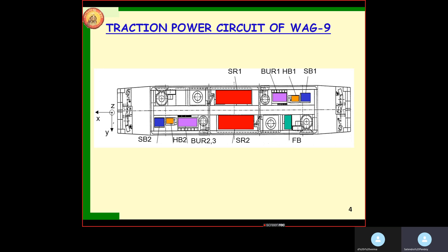Regarding the locations, let's see in the PPT. In machine room 1, we have SB1, HV1, BR1, SR1. In machine room 2, we have SB2, BR3, SR2, and filter block. In WAPC1, the positioning of HV1 is changed — HV1 comes to machine room 2, and our HV2 runs in machine room 1.